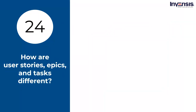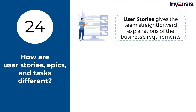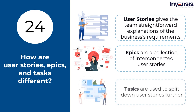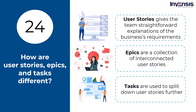How are user stories, epics, and tasks different? User stories give the team straightforward explanations of the business's requirements from the end-user's point of view. Epics are a collection of interconnected user stories — they're generally big and complicated. Tasks are used to split down user stories further; they are the smallest unit used to monitor work in Scrum, and a task is normally completed by a single person or a two-person team.